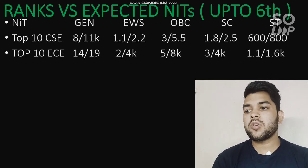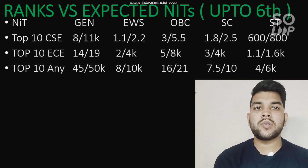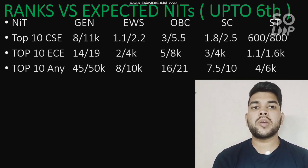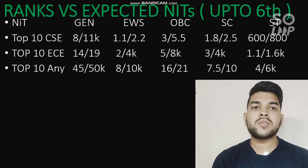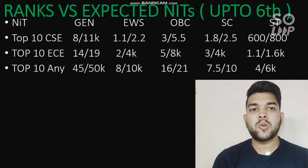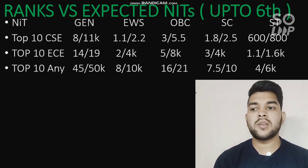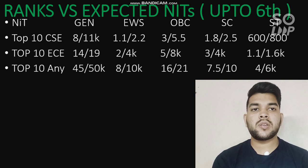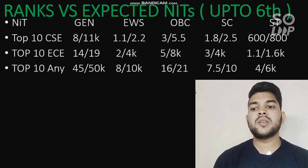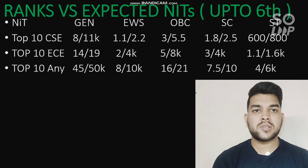For top 10 NITs with any possible branch: since top 10 NITs have a larger number of branches, the cutoff goes much higher. General category ranks go up to 45,000 and 50,000 for male and female; EWS 8,000 and 10,000; OBC 16,000 and 21,000; SC 7,500 and 10,000; ST 4,000 and 6,000.